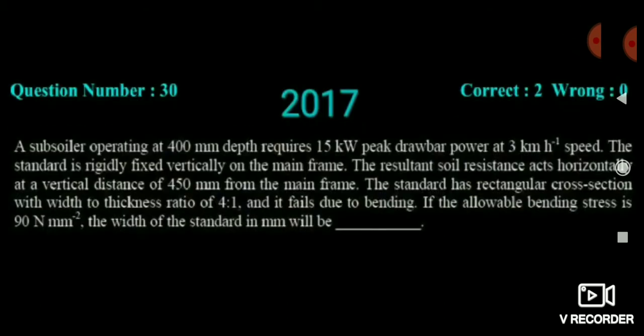Now see the next question, asked in GATE 2017. A subsoiler has an operating depth of 400 mm and requires 15 kW of peak drawbar power at a speed of 3 km/h. It is fixed vertically with soil reaction acting at 450 mm from the main frame. The standard has a rectangular cross section with width-to-thickness ratio 4:1 and allowable bending stress of 90 N/mm². Find the width of the standard.